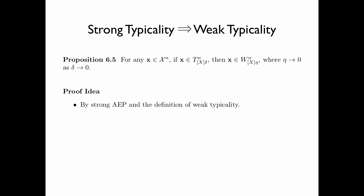Proposition 6.5 says that for any sequence x of length n, if x is strongly delta-typical, then x is weakly eta-typical, where eta tends to 0 as delta tends to 0. The proof follows directly from the strong AEP and the definition of weak typicality.